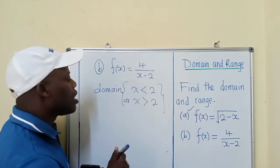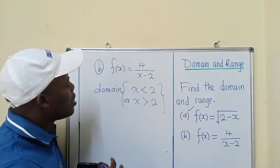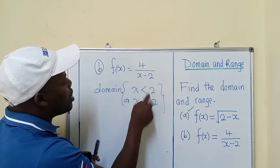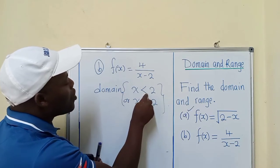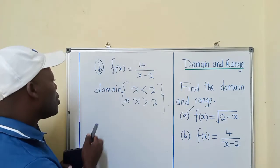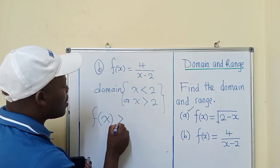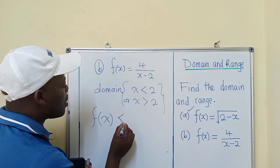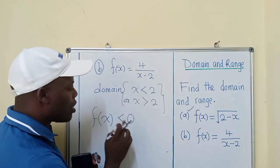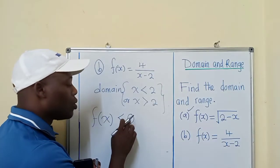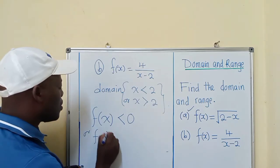Now, since we found our domain, to find our range we try to figure out which solutions we can get when we substitute values from this domain. The function values, f(x), will be less than 0 or f(x) will be greater than 0. Zero is not included—you can't find your answer to be equal to zero.